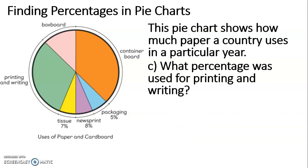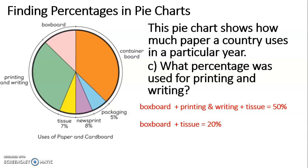Final question — what percentage was used for printing and writing? We know that tissue is 7%, and we've just worked out that box board is 13%. Box board, printing and writing, and tissue all together would make 50%. Box board plus tissue is 20% — that's 7 plus 13. 50% subtract that 20% is 30%. We therefore know that printing and writing must be 30%.